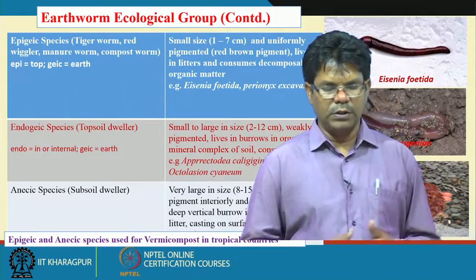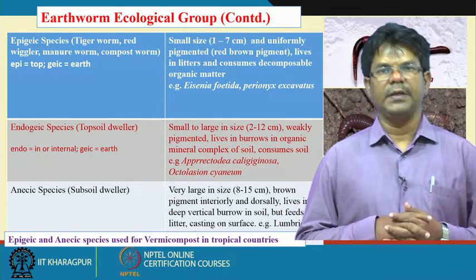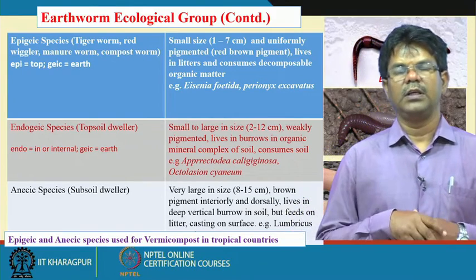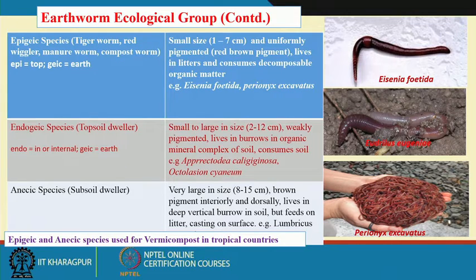Looking at the earthworm ecological groups: 'epi' means top and 'geic' means earth, so epigeic earthworms live on top soils and leaf litter, feeding on decomposable organic matter. Their size is small — 1 to 7 centimeters — uniformly pigmented red and brown. Examples include Eisenia foetida, mainly used for composting in tropical and subtropical latitudes where temperature can reach 40°C or more. Eudrilous and Perionyx species are also used for composting.